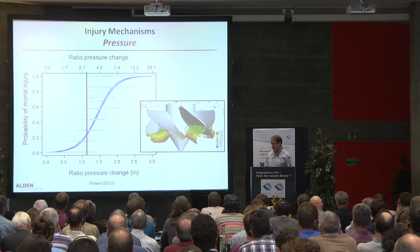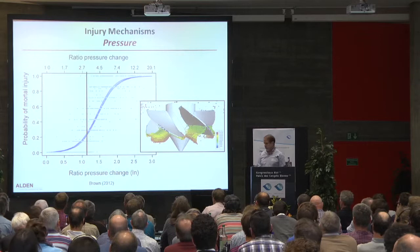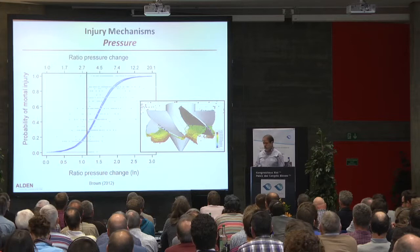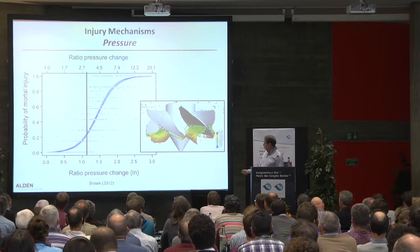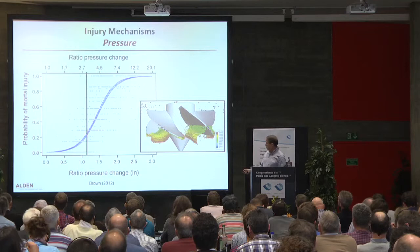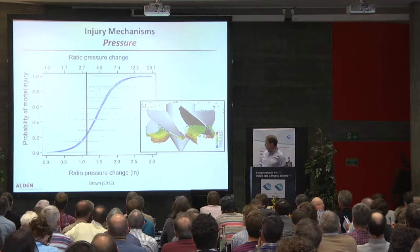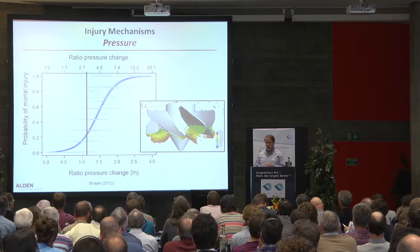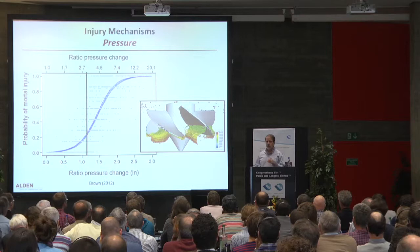This gives an example of the big issue: acclimation pressure versus minimum pressure experienced. This is the ratio of the pressure change — so if a fish was acclimated at 100 kilopascals and went through 33 kilopascals, it would be a ratio of 3. You can see the probability of mortality versus the ratio: a fish with that ratio of pressure change might experience about 20% mortality. But importantly, the minimum pressures in a turbine do not occur over the entire cross-section, so the probability that a fish will experience the minimum pressure isn't 100% — it can be much lower than that.